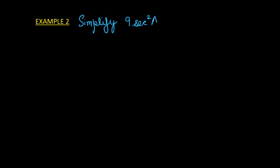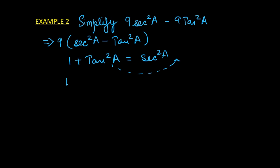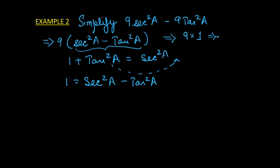Let us do another example. Simplify 9sec²A − 9tan²A. From both terms we can take out a factor of 9, giving 9(sec²A − tan²A). Which identity do we know in terms of secant and tangent? We know 1 + tan²A = sec²A. Rearranging, 1 = sec²A − tan²A. So, substituting, the expression simplifies to 9 × 1 = 9.